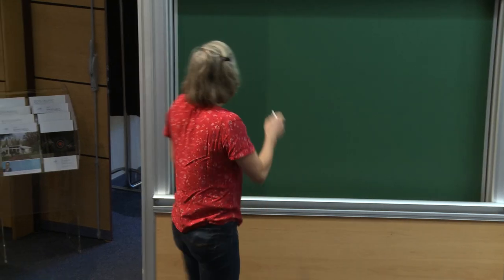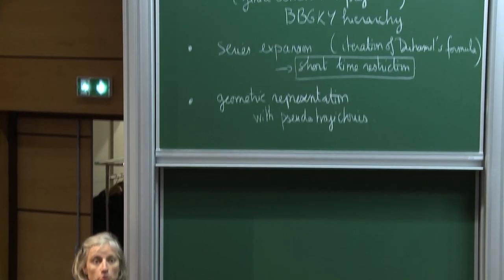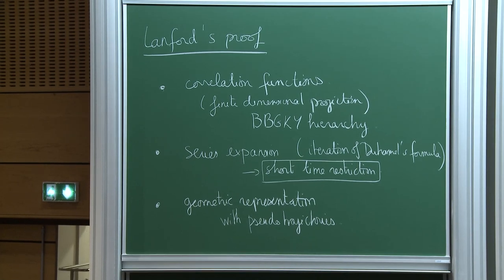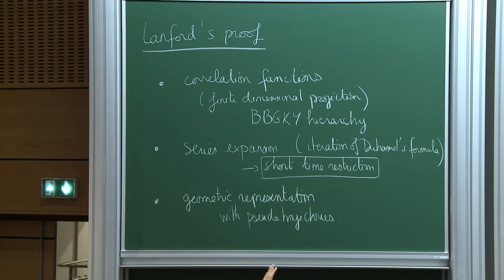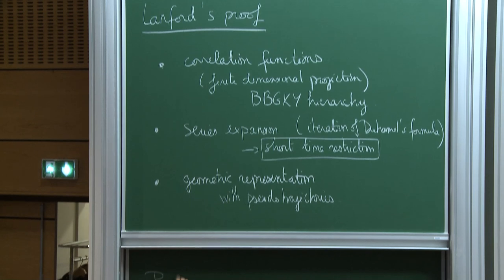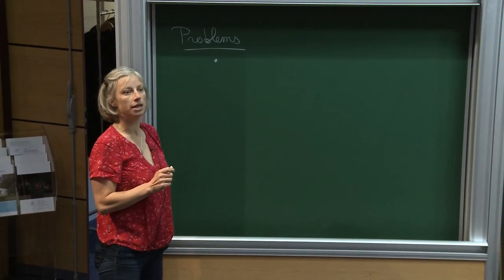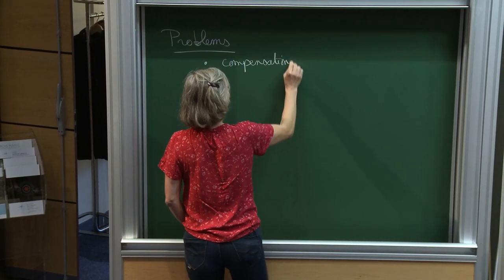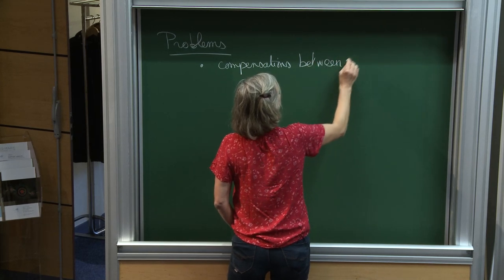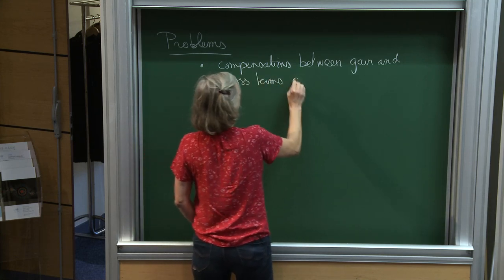This proof actually doesn't see the signs at any point. Some terms have a minus sign, others have a plus sign, but when you try to have an a priori estimate, you just look at all the terms and take the plus sign. So the first problem is that we do not see any compensation between gain and loss terms.